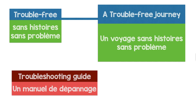A troubleshooting guide — how to translate that? In French, we use the word 'dépannage': un manuel de dépannage or un guide de dépannage, to translate 'troubleshooting guide.' And to troubleshoot, for example, a computer or a mobile, we say 'dépanner': dépanner un téléphone, dépanner un ordinateur.